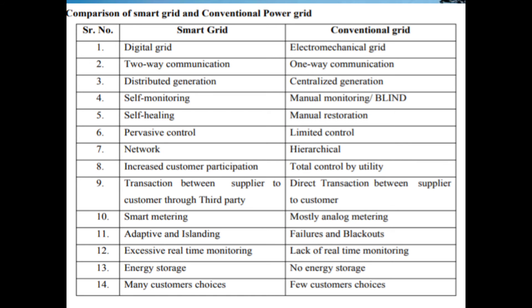Smart metering is used in smart grid, while mostly analog metering is used in conventional grid. Smart grid is adaptive and has high resilience, while conventional grid is prone to failure and blackouts. Smart grid has real-time monitoring, while conventional grid lacks it. Energy storage is possible in smart grid but not in conventional grid. Smart grid offers many customer choices, while conventional grid offers few.